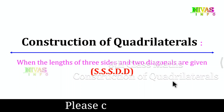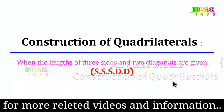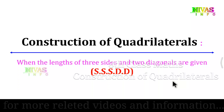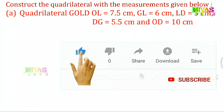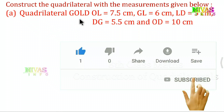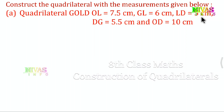In this exercise, we have 3 sides and 2 diagonals, and we have 3 quadrilaterals to construct. The first problem is quadrilateral GOLD. OL is equal to 7.5 cm, ZL is equal to 6 cm, LD is equal to 5 cm, DZ is equal to 5.5 cm, and OD is equal to 10 cm.